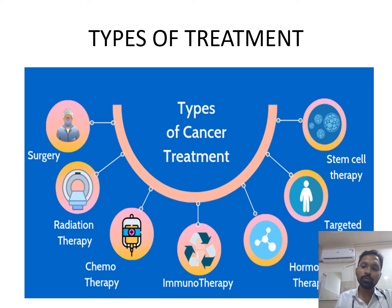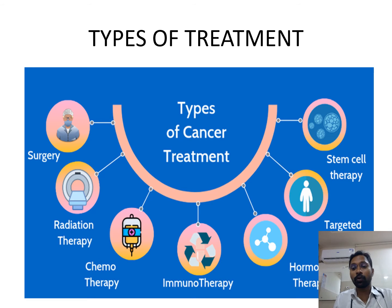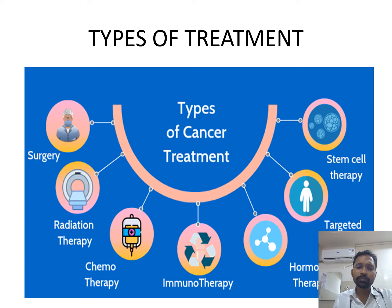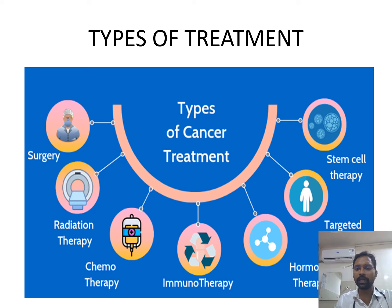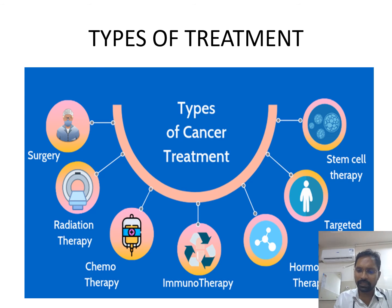So how do we treat cancer? Before a few decades, almost all cancers were associated with a poor prognosis and were considered like a death sentence for most patients. But now, because of the development of science, we are able to treat and even cure most cancer patients. The various modalities of treatment include surgery, radiation therapy, chemotherapy, immunotherapy, hormonal therapy, targeted therapy, and stem cell therapy.